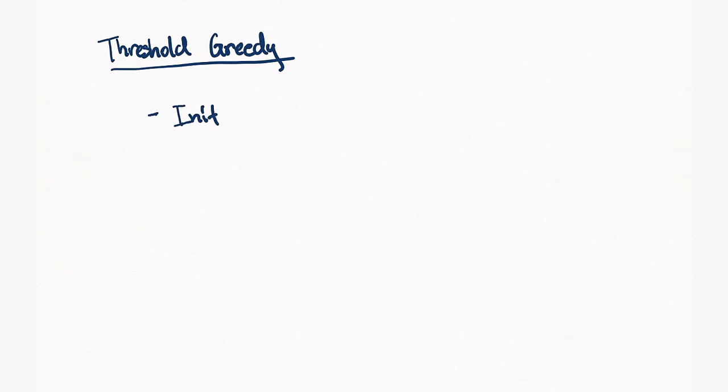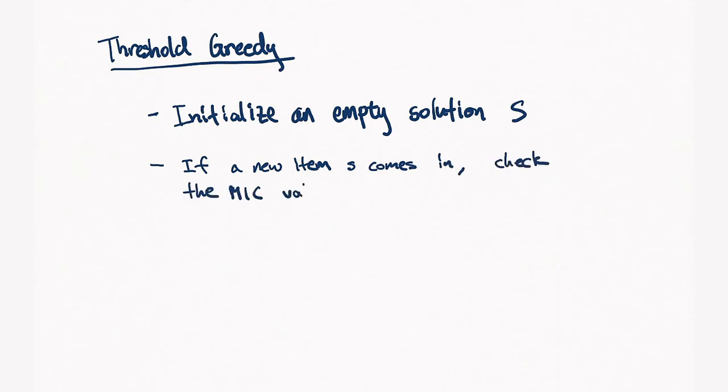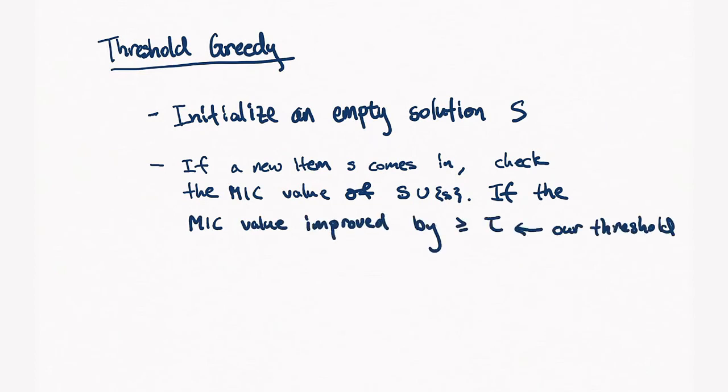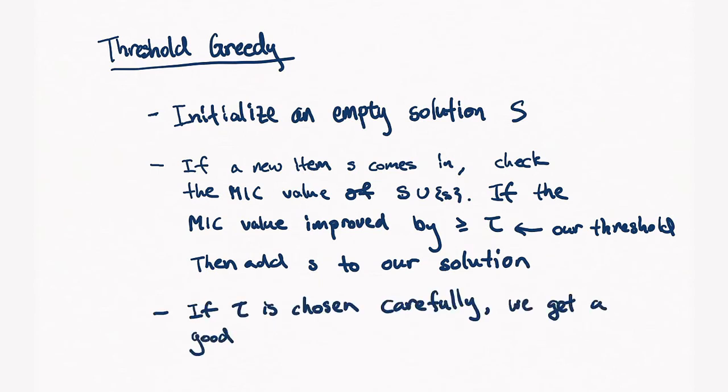So, how does threshold-greedy work? Well, it's actually quite simple. We start out with an empty solution and whenever a new item comes in, we just check the marginal value of the new item on top of our current solution. So, if the value exceeds some threshold, if the new item improves our solution by some tau, then we simply add it to our solution. And the main thing is that if tau is chosen carefully, we get quite a good approximation. In fact, we'll get a valuable set, S, and you can imagine this procedure as filtering the input for valuable elements.